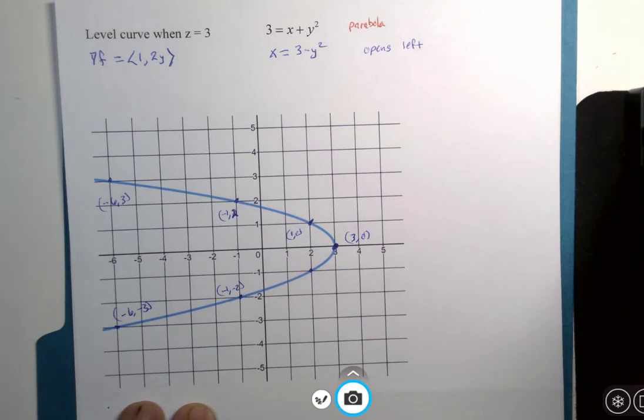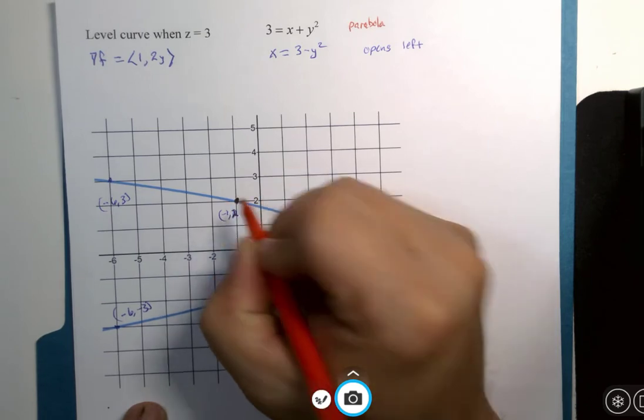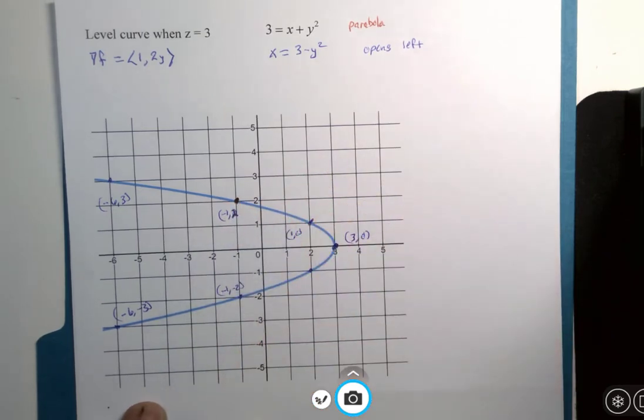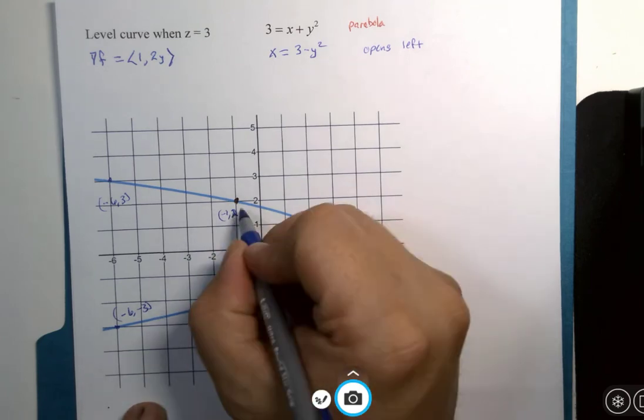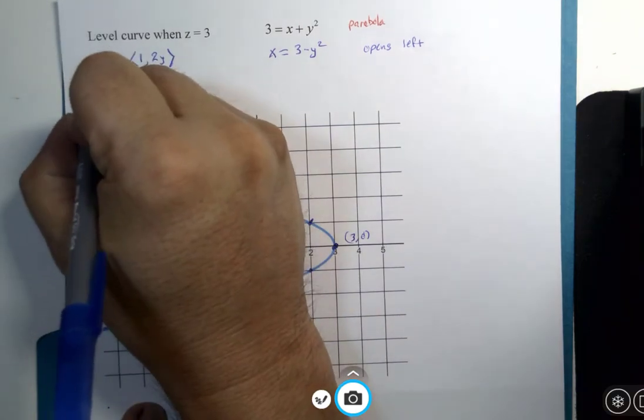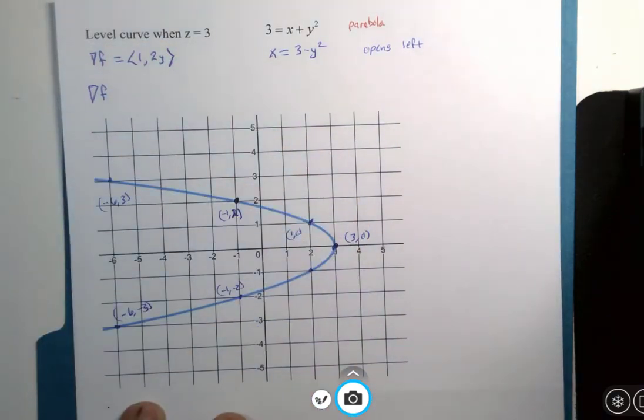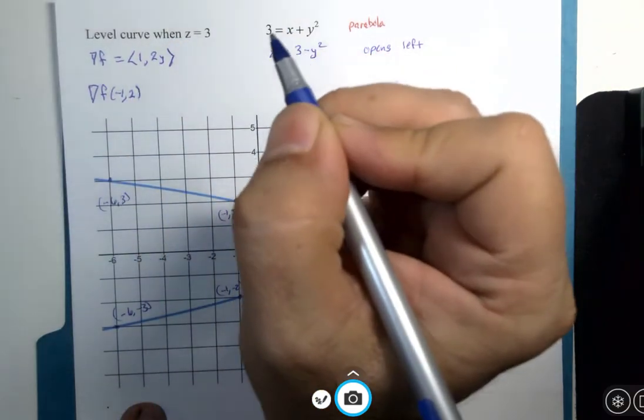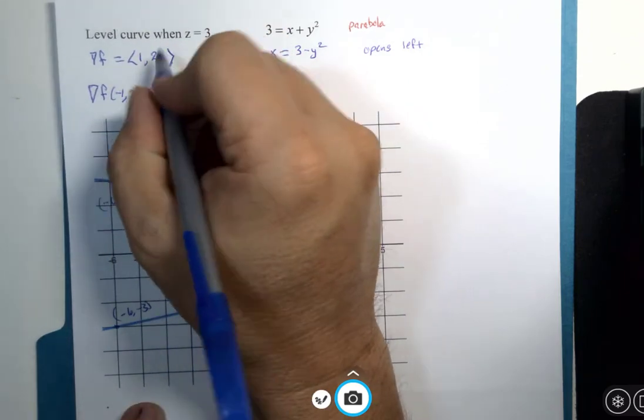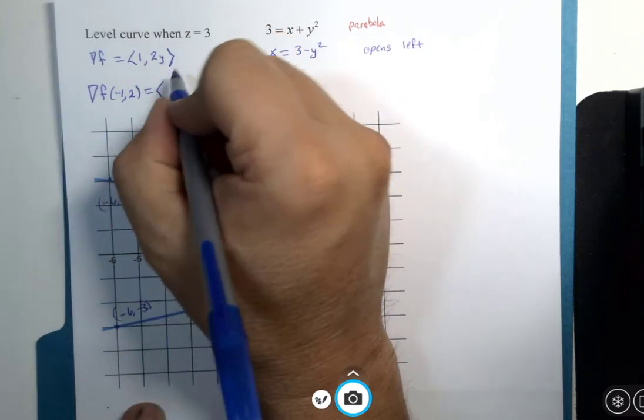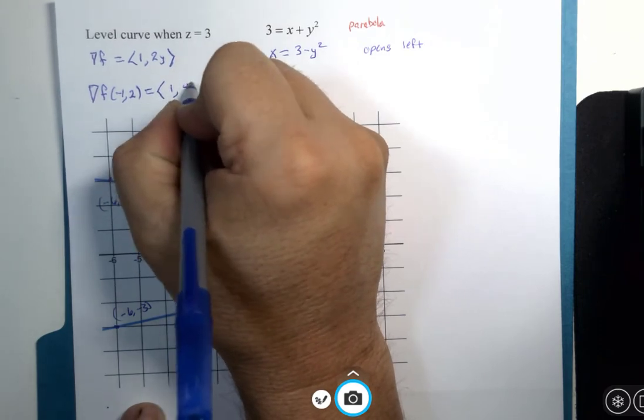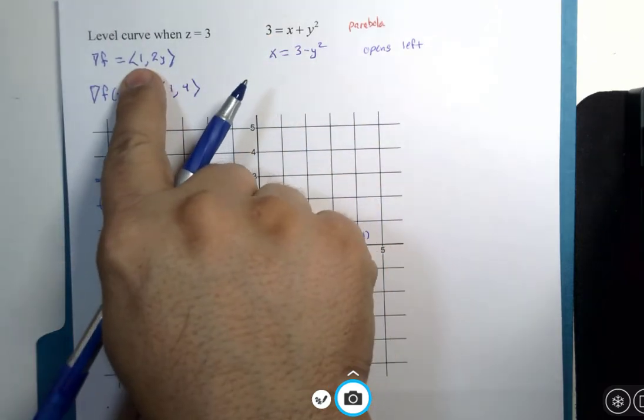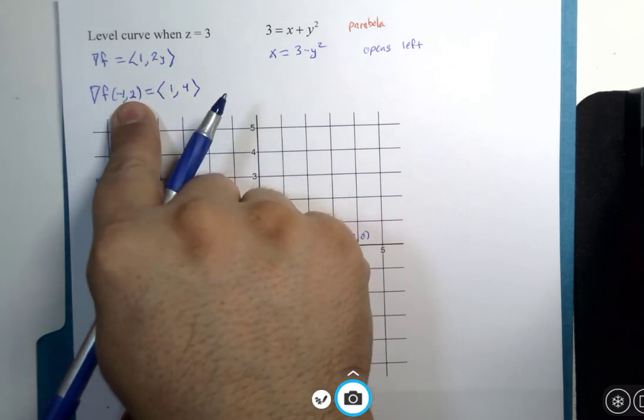Now, let's suppose we choose one of these points. I'm going to choose this point here. If I were to evaluate the gradient, now I need my correct notation, at the point where x is negative 1 and y is positive 2, I would get the vector 1, 4. See, the x component is always 1, and then 2 times the y value, so that would be 4.